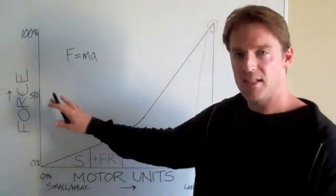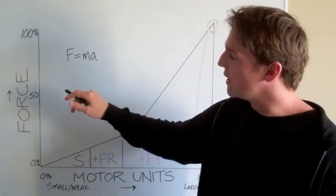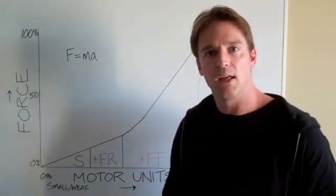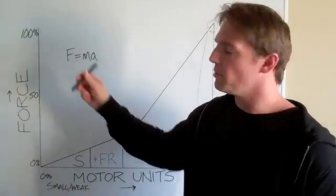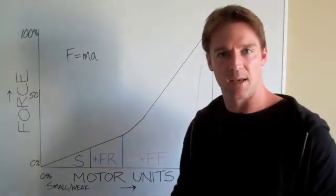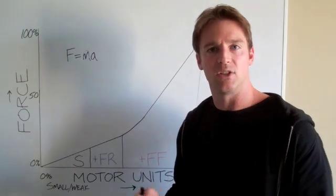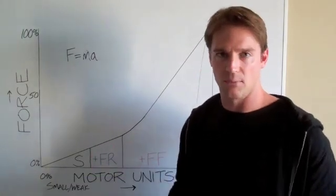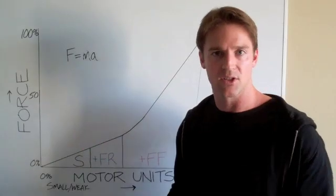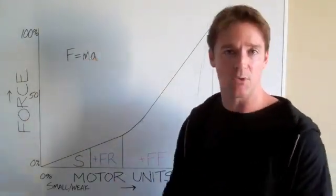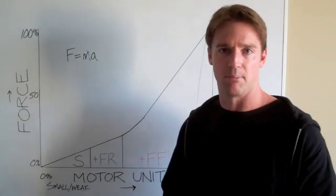So, when we look at the most basic relationship between force and motor unit recruitment, we have to look at this simple equation: F=ma, force equals mass times acceleration. Now imagine mass is just the weight that you're lifting. For our discussion we're just going to say the mass equals the weight. So, the 300 pound barbell is the mass.